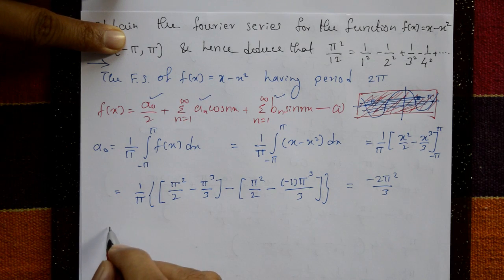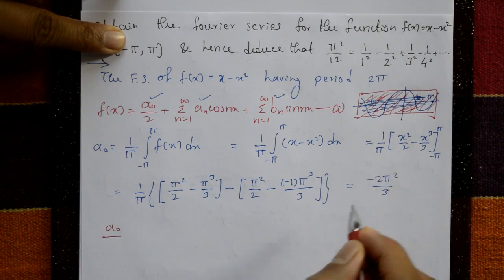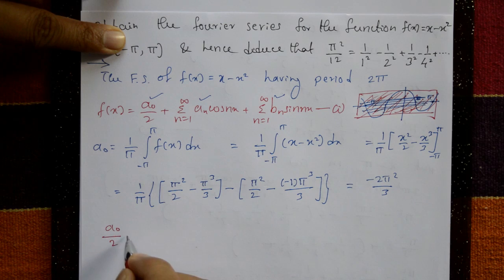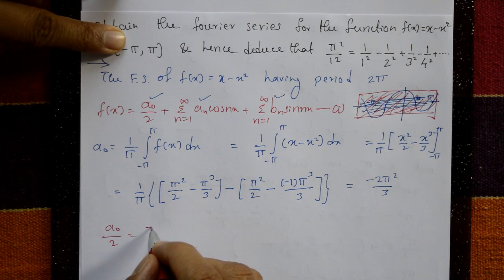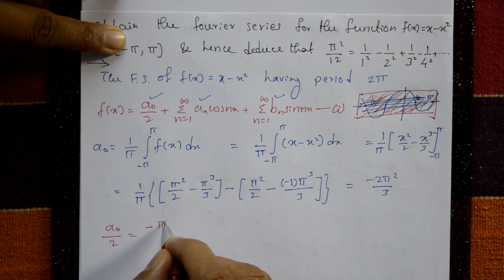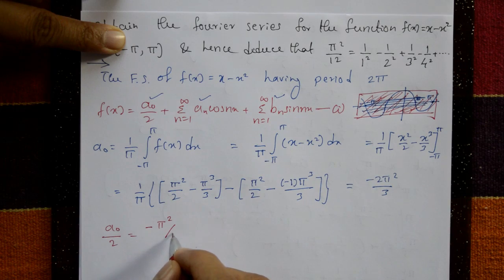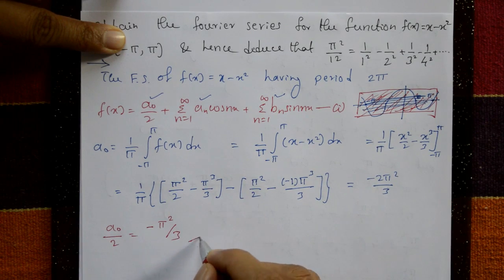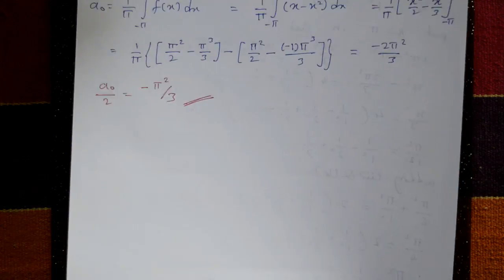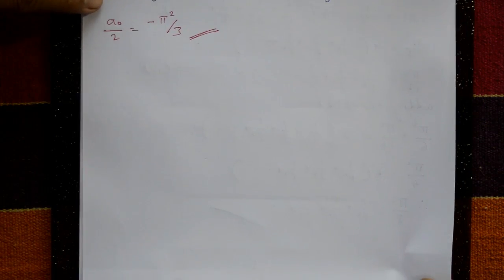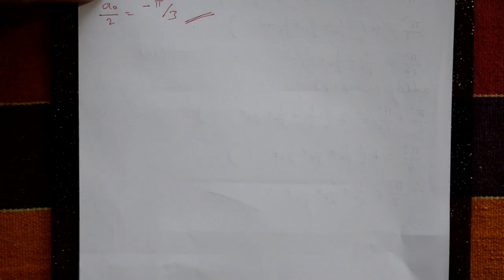a₀/2 means divide a₀ by 2, so the 2 cancels: a₀/2 = -π²/3.